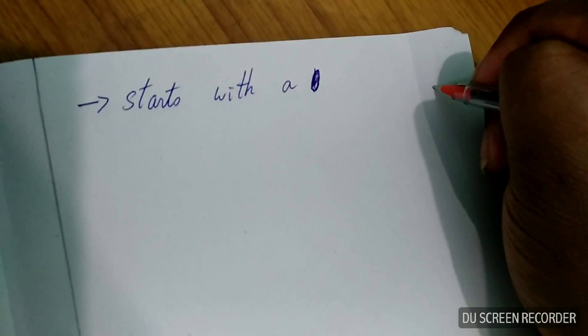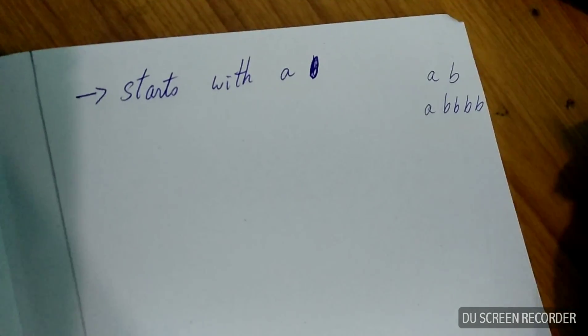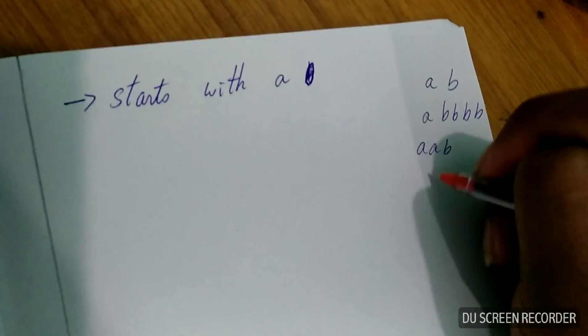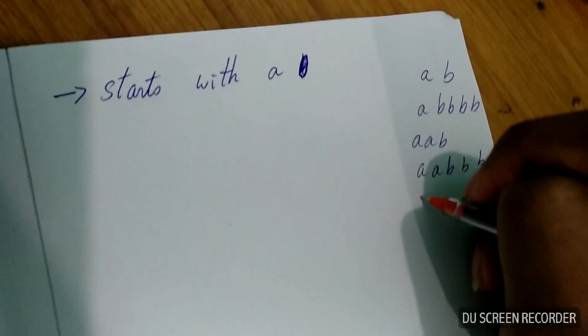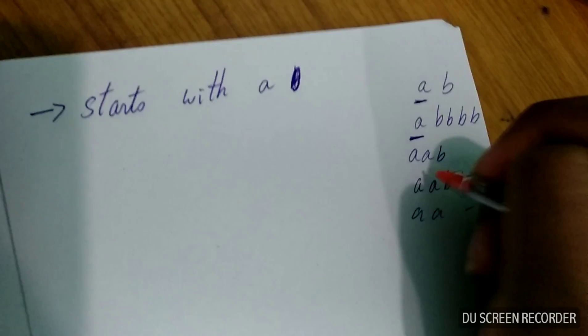Some of the examples are: it can be A, B; A, B, B, B, B is possible; A, A, B is possible; A, A, B, B is possible; A, A. Everything is possible. Only the condition is, it should start with A.